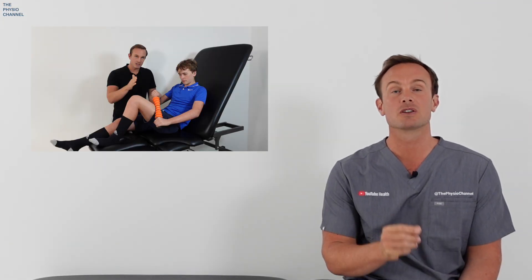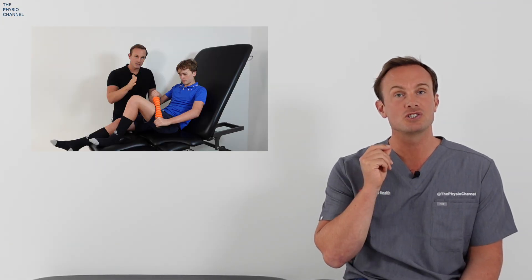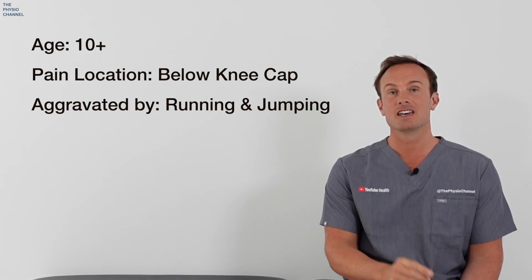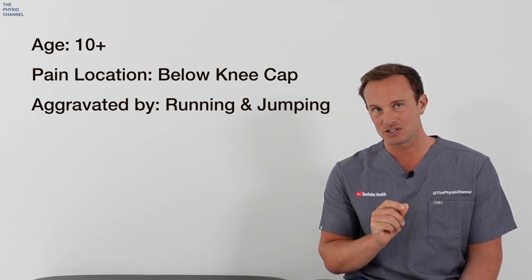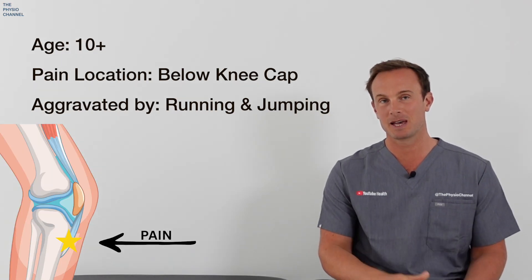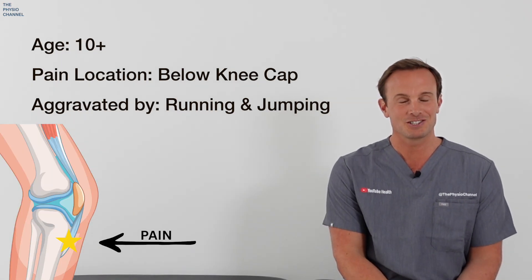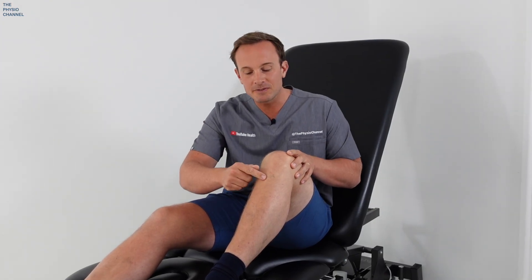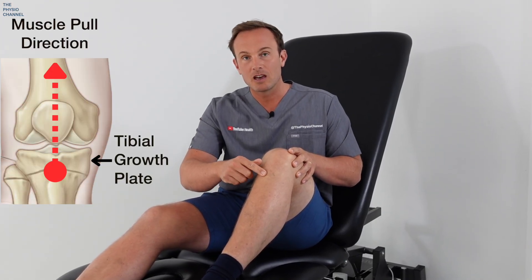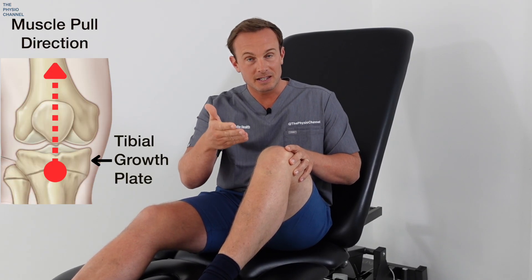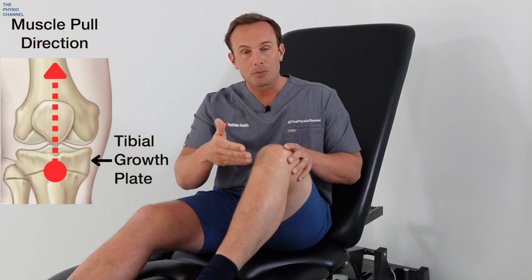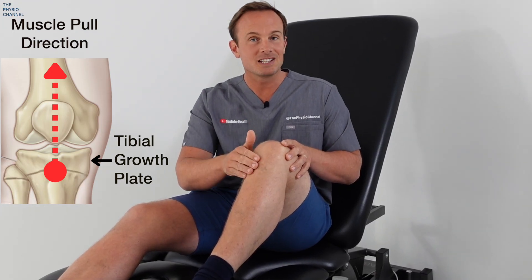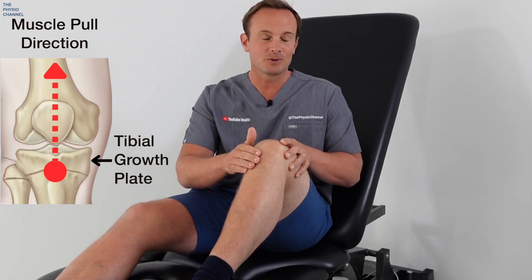Firstly, if we refer back to my earlier video on Osgood Schlatter's, we can recall that the condition usually starts around the age of 10, the pain location is just below the kneecap, and it's often aggravated by running and jumping activities. The pain is thought to be caused by excessive strain on the tibial growth plates, which then harden into adulthood, bringing the pain to an end usually by around age 15 or 16.